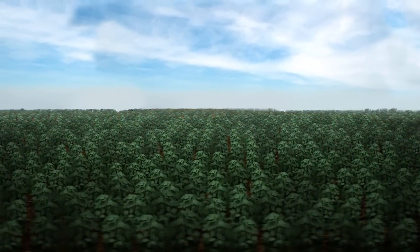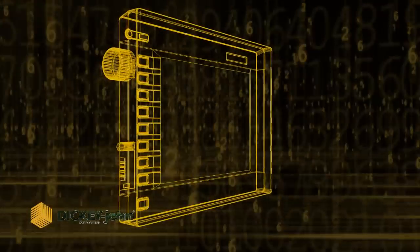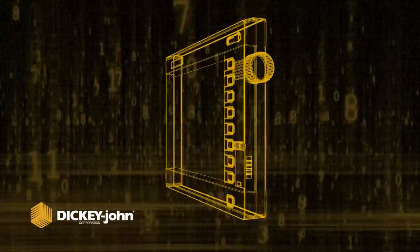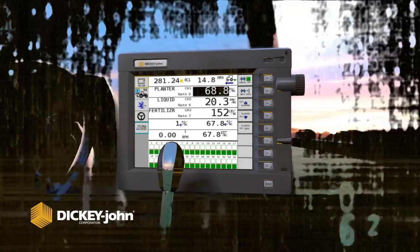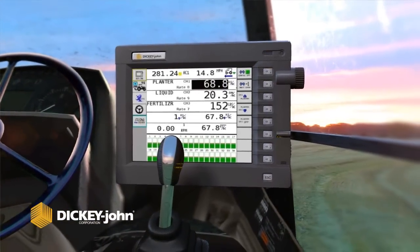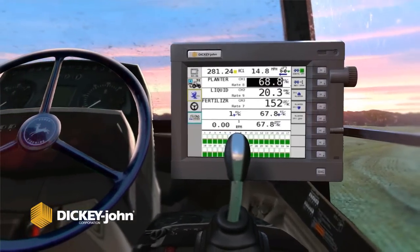It's now possible with Dickie Johns IntelliAg products that offer application control with state-of-the-art communication between implement and tractor. IntelliAg is a revolutionary product that provides customizable solutions to meet your agricultural needs,